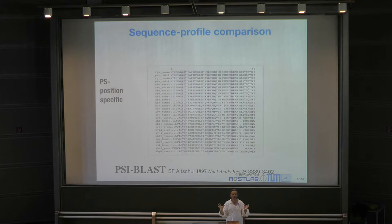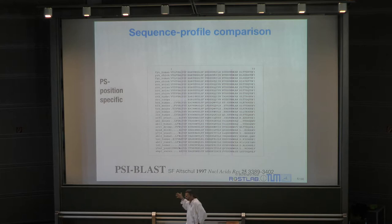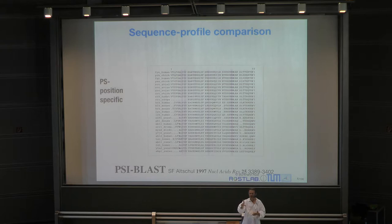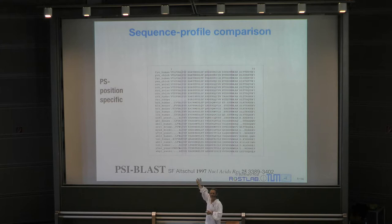You do pairwise alignments and use a threshold — I showed this with the HSSP distance curve that had alignment length versus percentage sequence identity. If a sequence is above the curve, you add it to the family. Then you compute the profile, and use that profile against the entire database again.